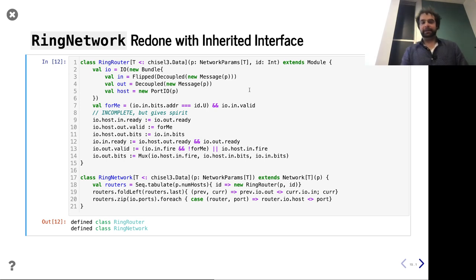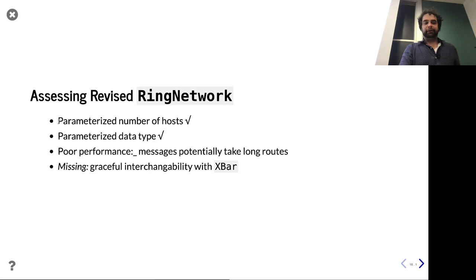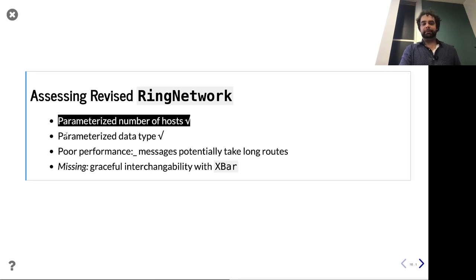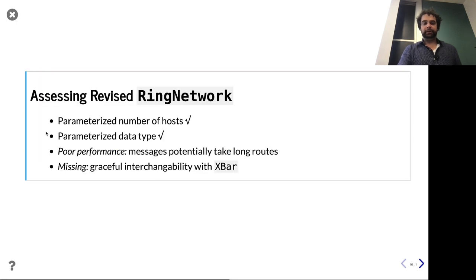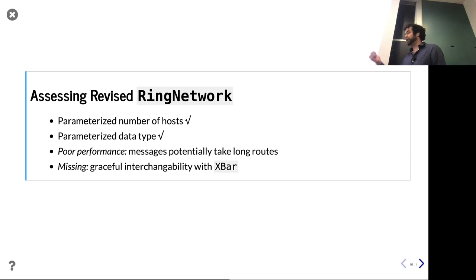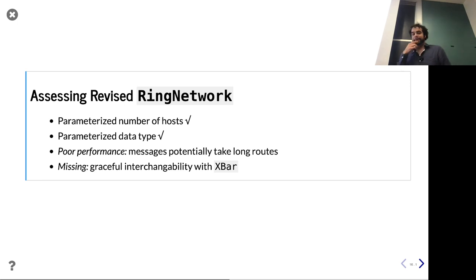So here's our ring. How are we doing so far? We've parameterized things like number of hosts and parameterized the type. Some downsides: number one is the unidirectional ring only goes in one direction, so the number of hops could be very long — that's not good. The other thing is it's actually not as interchangeable with the crossbar as we would like. So maybe let's make that a little bit more similar and try to make that even more smooth.